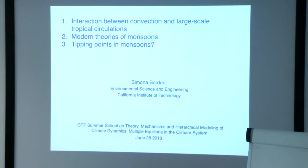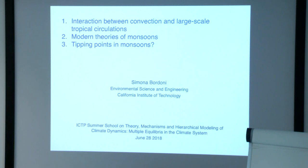I divided the material into three main topics, though the first two are blended. First: how do we think about the interaction between convection and large-scale tropical circulations—focusing on the large-scale overturning, the Hadley cell, and monsoonal circulations—and then moving toward modern theories for these systems. If I have time, because this is one of the themes of this summer school, I'll try to address the question: are there tipping points in monsoons? This is not research I've done myself, but it fits well with some of the themes discussed here.